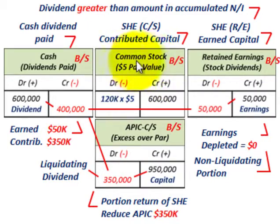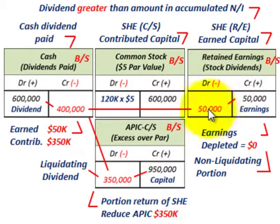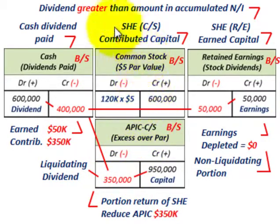In both cases, the common stock par value remained the same because we take the excess out of the additional paid-in capital account. We started with retained earnings first — in this case depleting it to zero — and then the additional amount came out of additional paid-in capital. This was the scenario where the dividend was greater than the amount accumulated in net income.